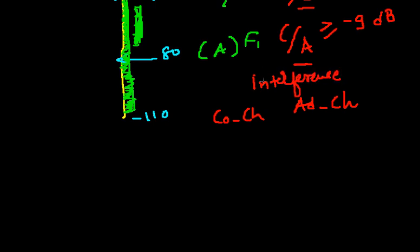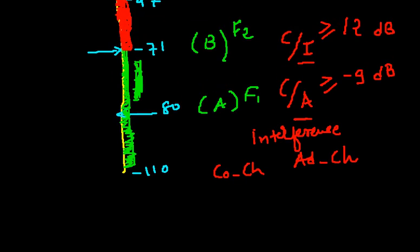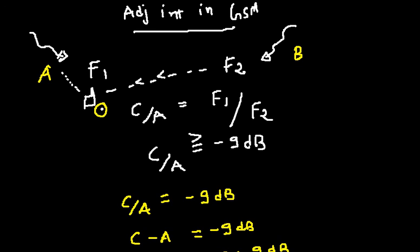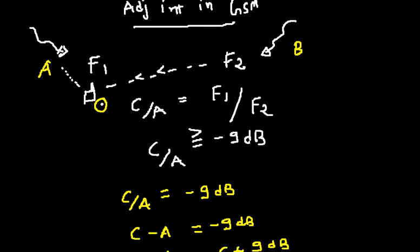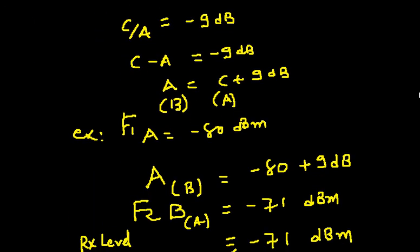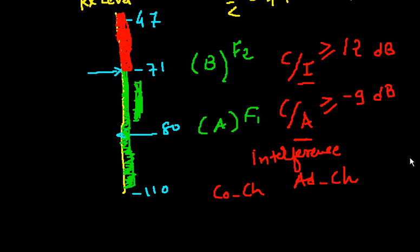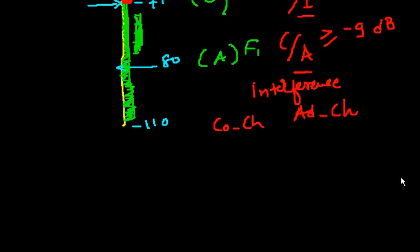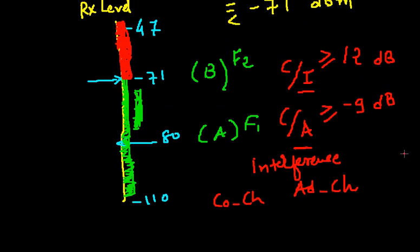The RF engineer has to ensure that you maintain this co-channel as low as possible throughout the area, and if possible maintain the adjacent channel also. So this is what about the adjacent channel interference. I will explain you more about how to achieve the interference within the limit. Let's see in the next lecture.